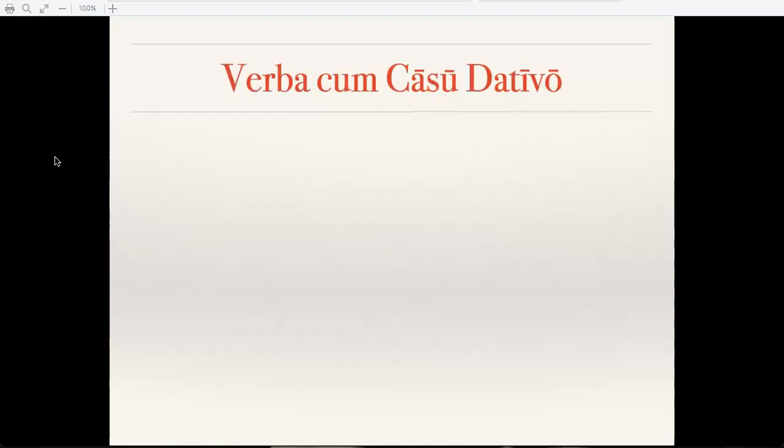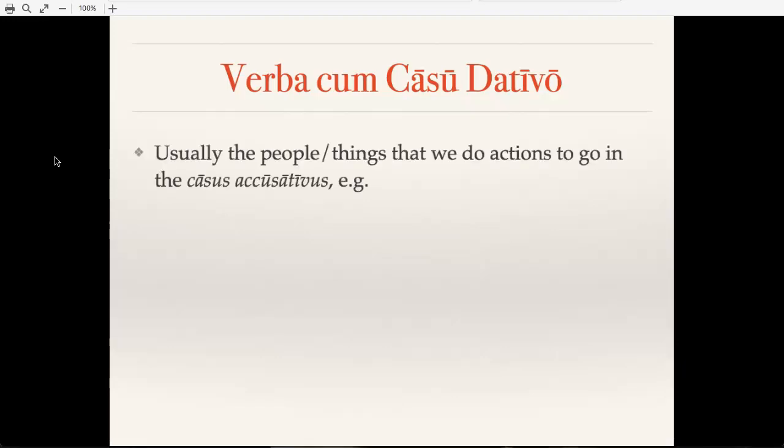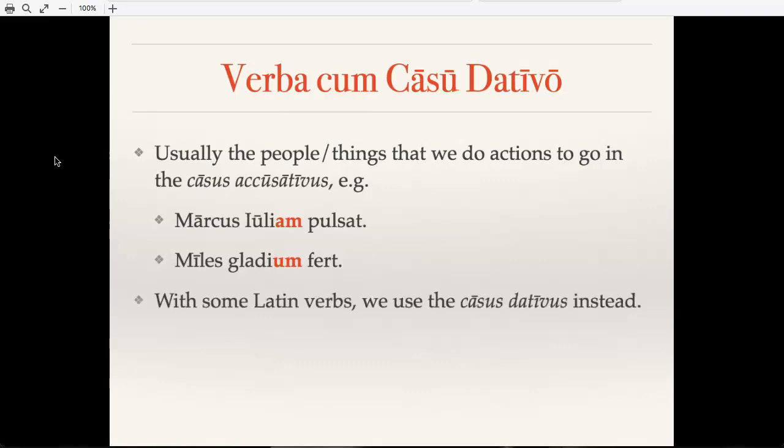A second topic we're introducing is verba cum casu dativo. And normally in Latin, when we're doing something to a person or a thing, that noun goes into the casus accusativus, Marcus Iuliam pulsat, or Miles gladium fert. However there are some Latin verbs where instead of using the casus accusativus, we'll use the casus dativus, and there are two that you need to be aware of right now. There are others that we'll learn later.